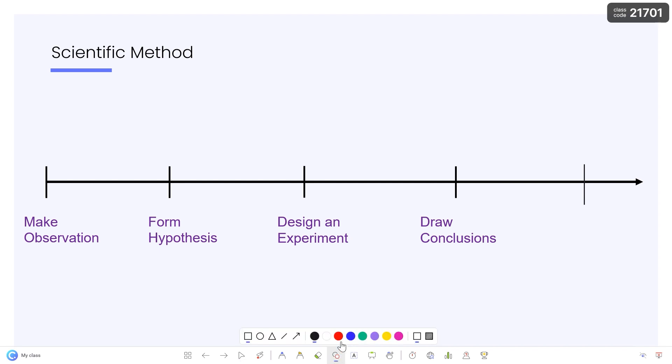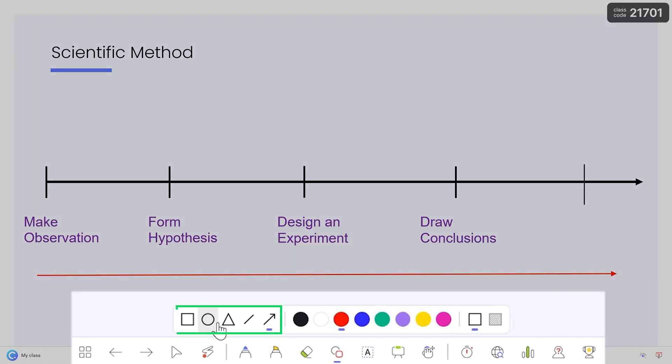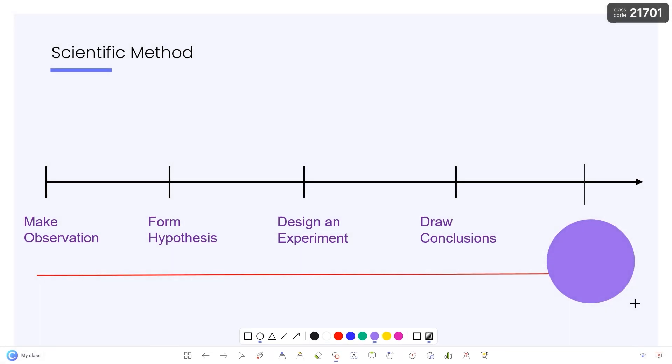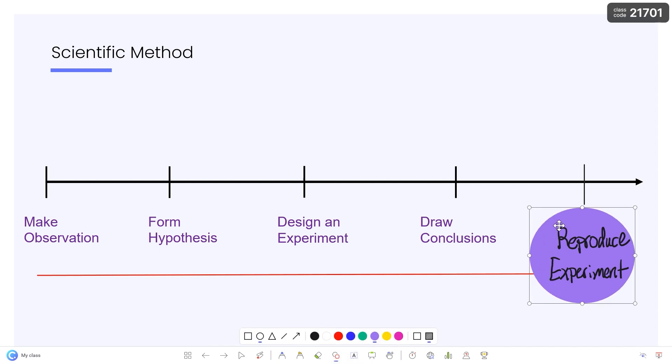You can also add shapes and lines to your slides to help illustrate your ideas quickly and neatly. Select your shape, color, and if you'd like it to be filled. You can also adjust the size and move them around your slide.